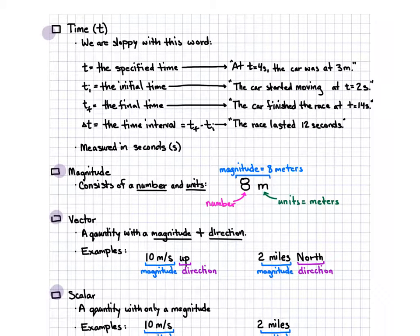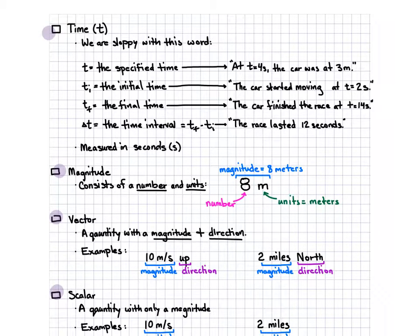Last thing — magnitude. You guys saw this in the lab yesterday. Question 9, I said what were the units? The units were meters per second, and the number was like 0.4 or something. So we say the magnitude of the velocity was 0.4 meters per second. Any number you write has always got to have a number and units. And that's it.